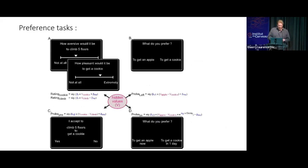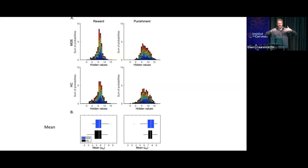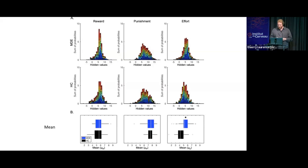When we compare the mean of the distribution for reward and punishment between patients and controls, we observed nothing — absolutely no difference in terms of reward or punishment. That was quite surprising to us. At the beginning of the project I was really thinking about anhedonia in depression and expecting some difference in terms of reward. But the quite strong and statistically significant finding was a difference in terms of effort — effort was more aversive for patients with depression compared to healthy controls.